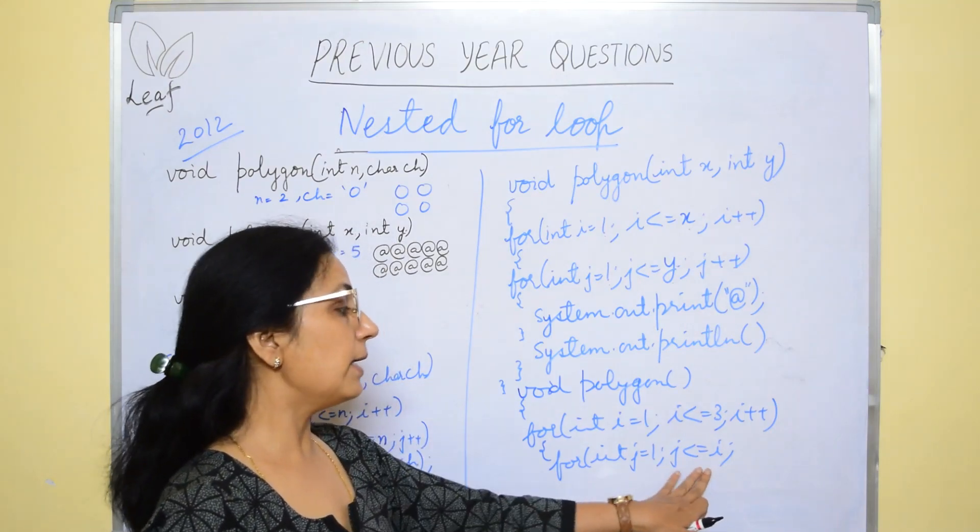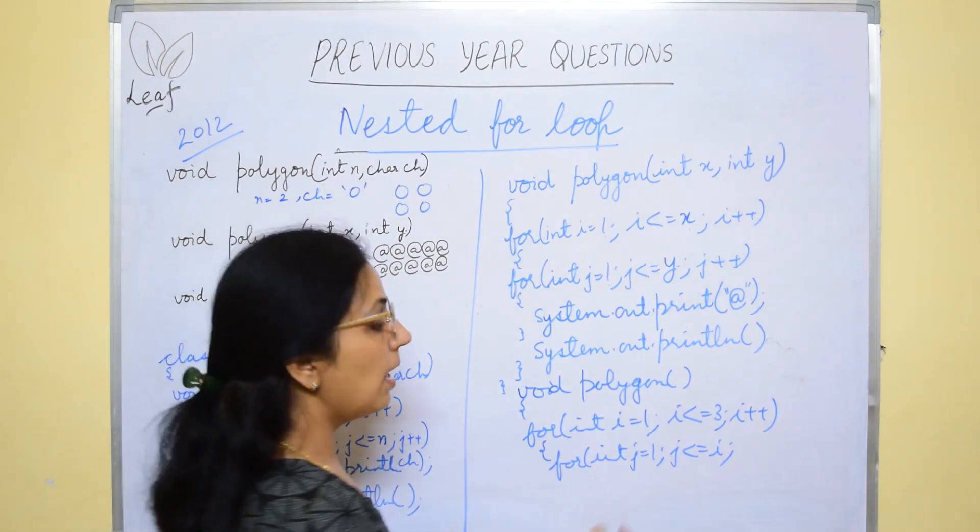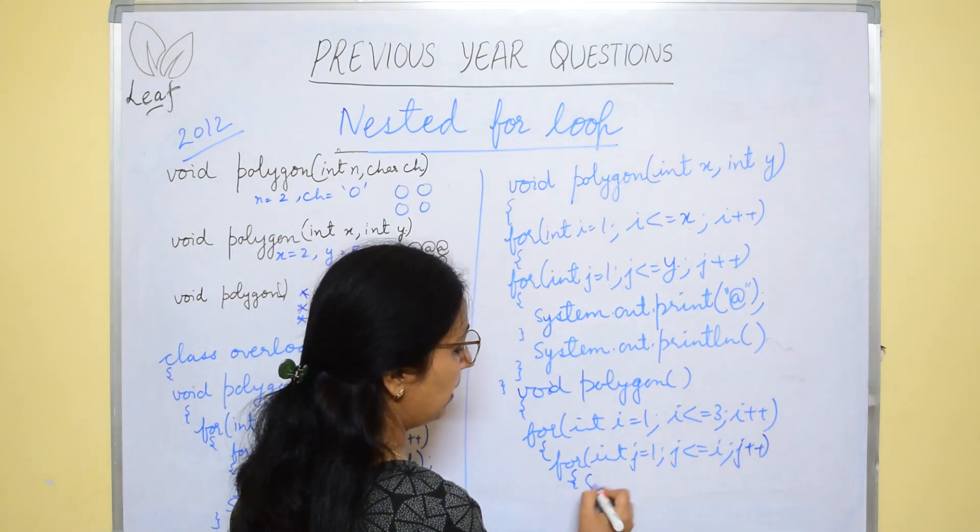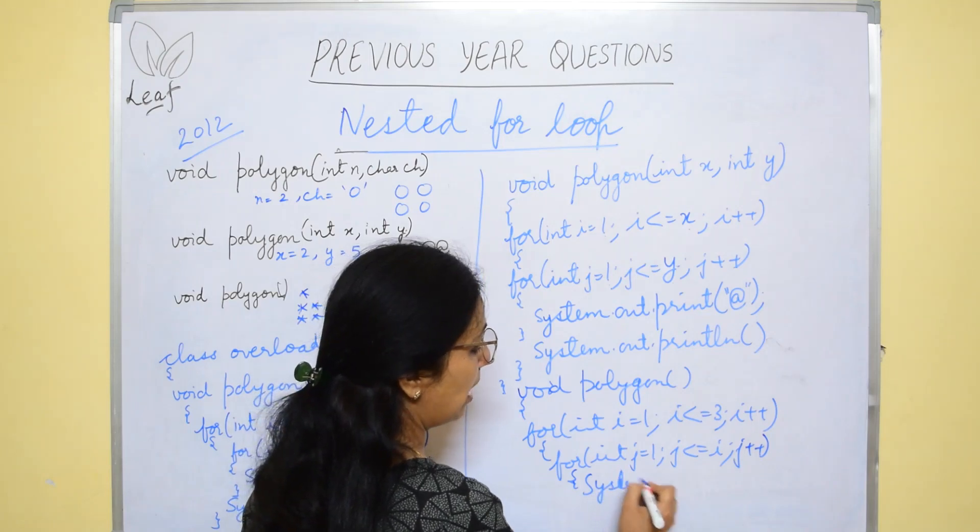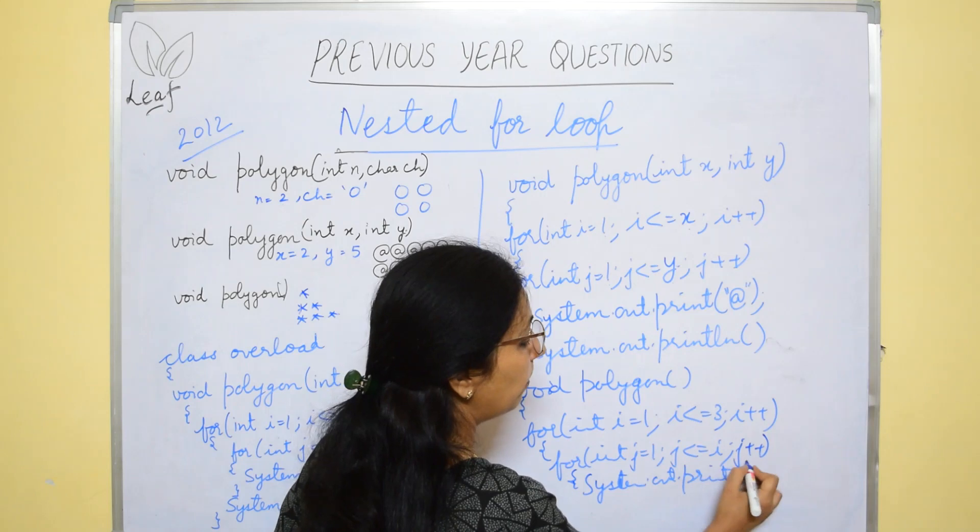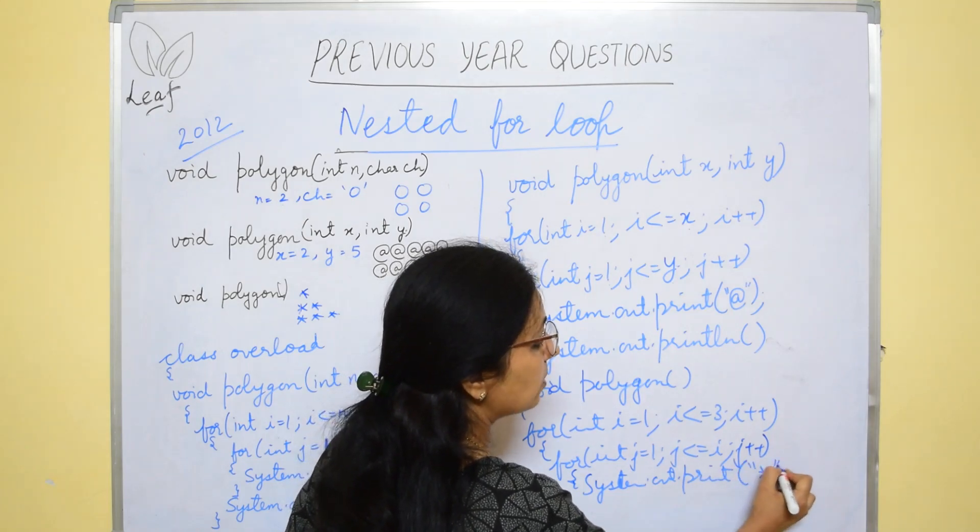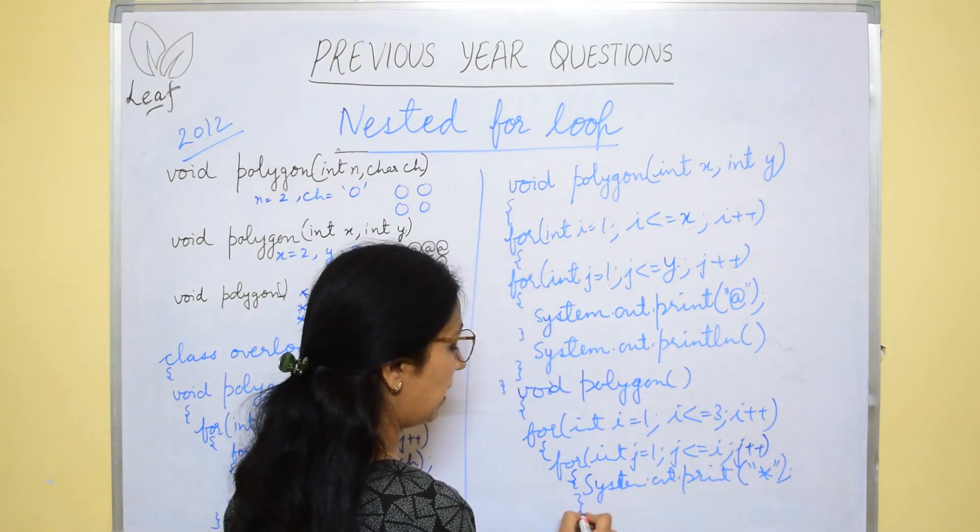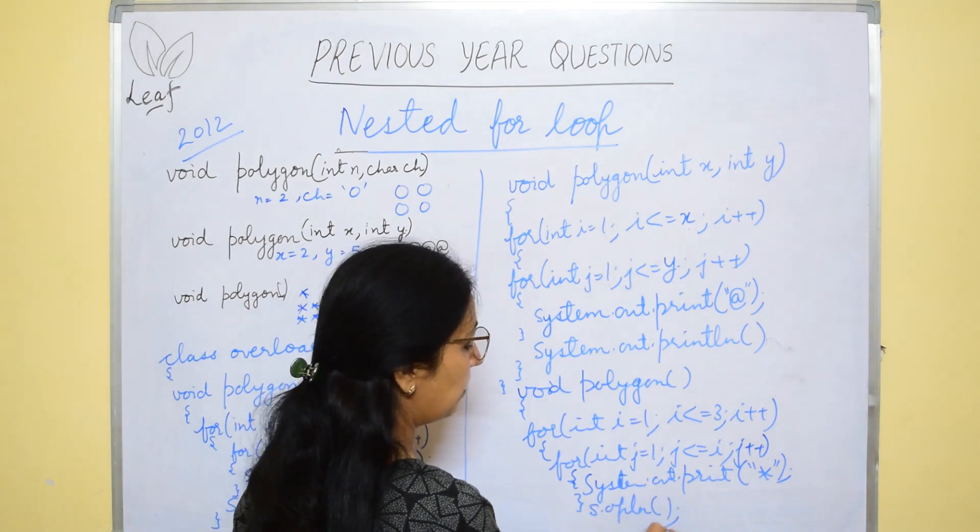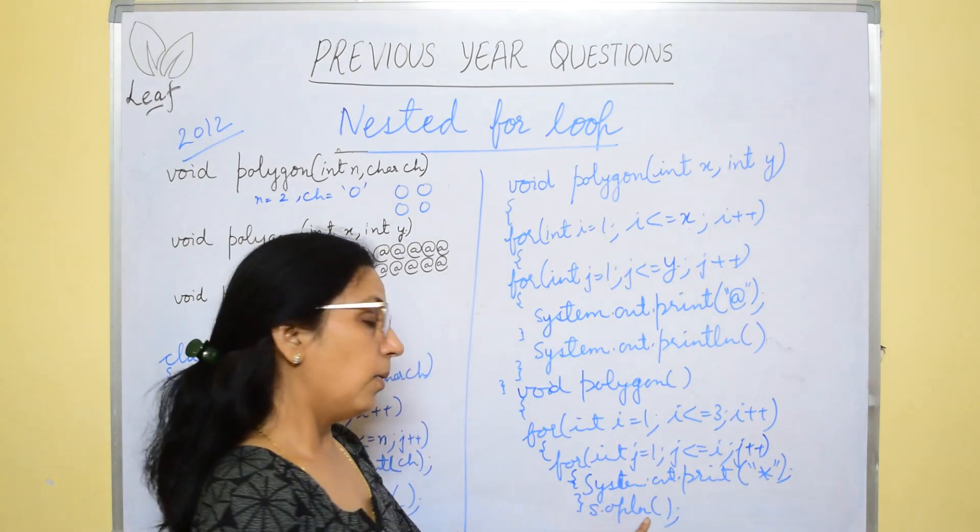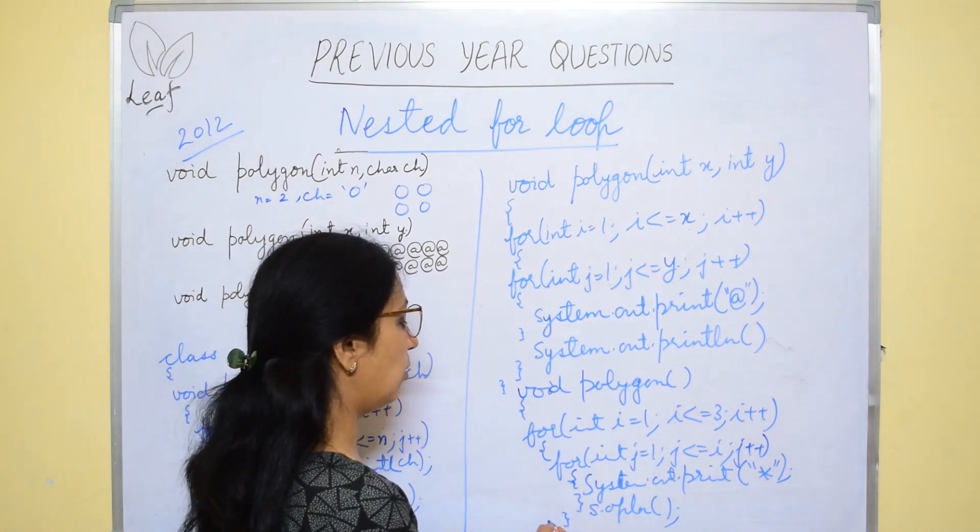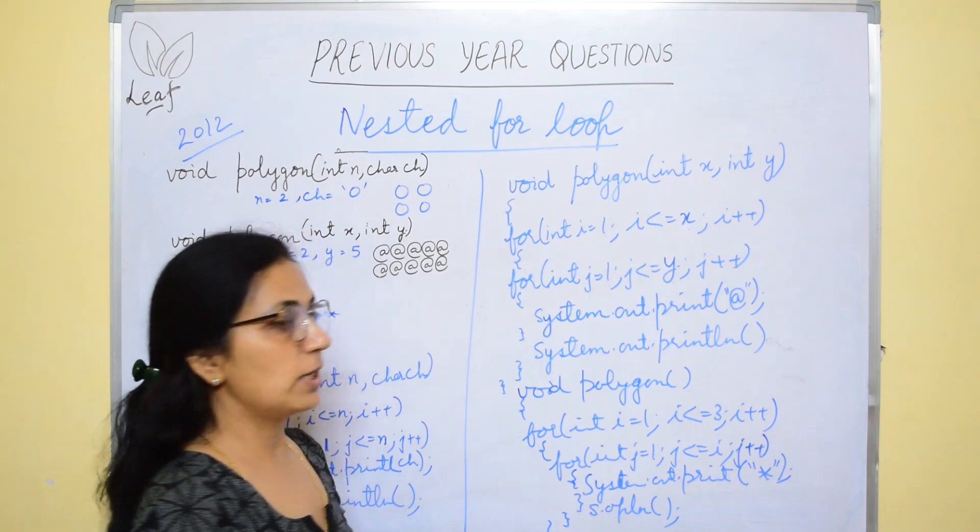Then, j plus plus and in print statement, system dot out dot print. What you have to print? Yes, asterisk symbol using print statement. And after that, print ln statement to shift to the next line. After that, you will close the outer loop and close this function.